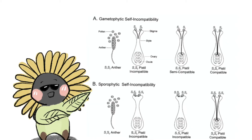Another way that this is done is by discriminating pollen based on their genotype. In gametophytic systems, self-incompatibility is determined by the pollen's own haploid genome, so pollen tube growth is inhibited when the pollen S-allele matches one of the S-alleles expressed in the pistil. This mechanism occurs in poppies, tobacco, petunia, and even tomatoes and potatoes. The sporophytic system is even more selective because the self-incompatible behavior is determined by the diploid genotype of the pollen parent. If either one of the S-alleles in the pollen corresponds to one of the pistil S-alleles, it will be rejected.